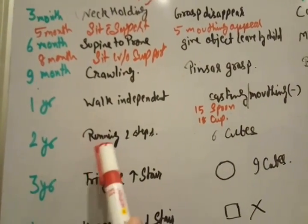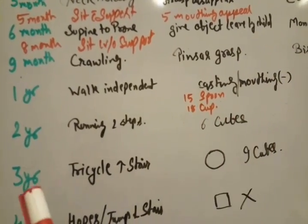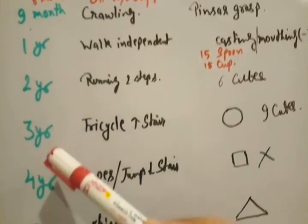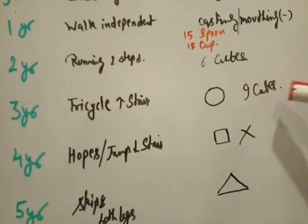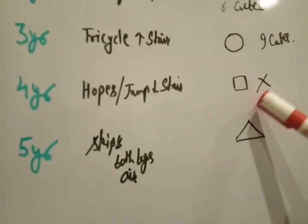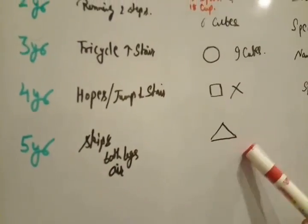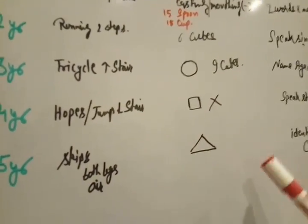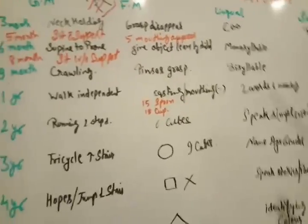At 2 year of age, he is able to make 6 cubes. At 3 year of age, a child is able to make a circle and 9 cubes. In 4 year of age, child is able to make square and cross. And at 5 year of age, child is able to draw triangle. They like to ask in so many cases and question papers. You are definitely going to receive one question from this.